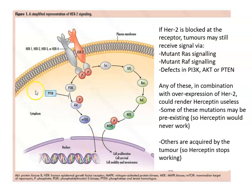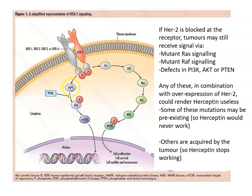Or a RAF mutation which gives constitutive RAS signaling, or maybe a PI3 kinase mutation or an AKT mutation that gives constitutive survival signaling, or defects in PTEN — usually loss of PTEN — which can also promote cell survival. So if you are blocking up here with an antibody but RAS is permanently switched on, blocking there is not going to have any effect on proliferation. Any mutations downstream of the growth factor receptor could render those antibody therapies to the growth factor receptor completely useless.